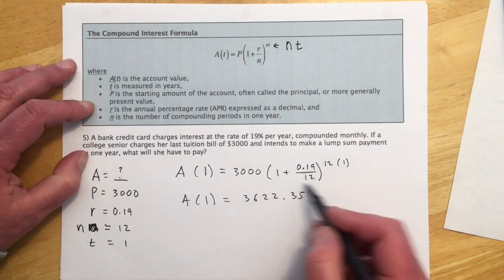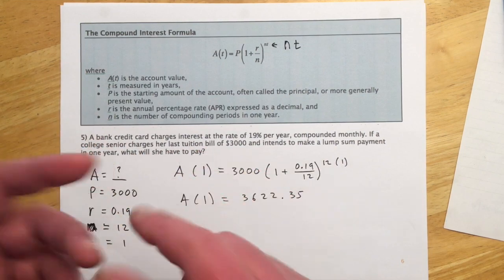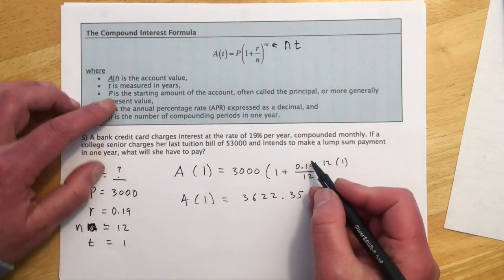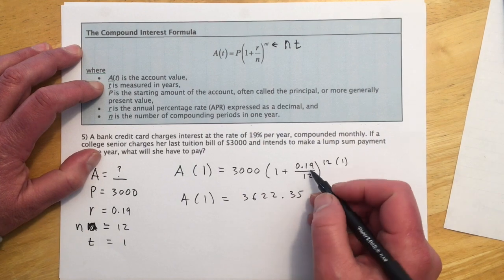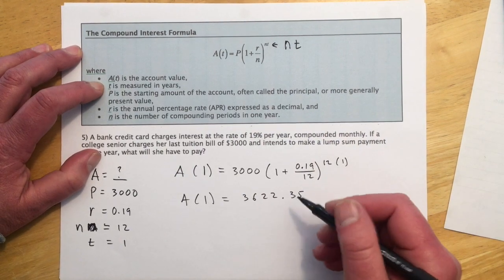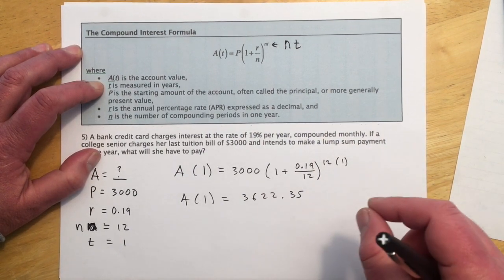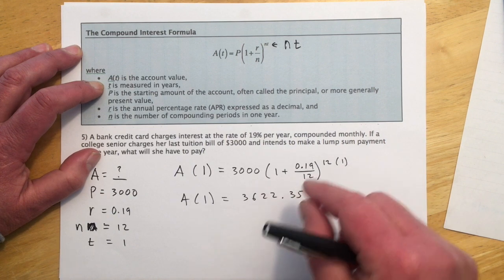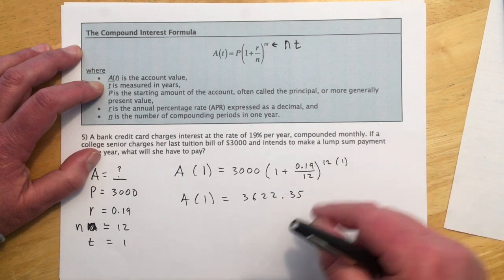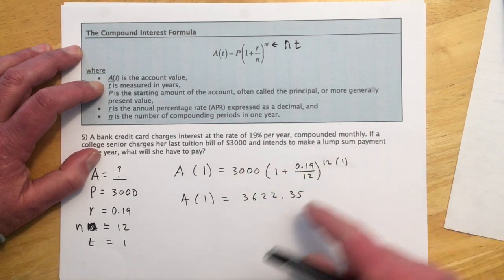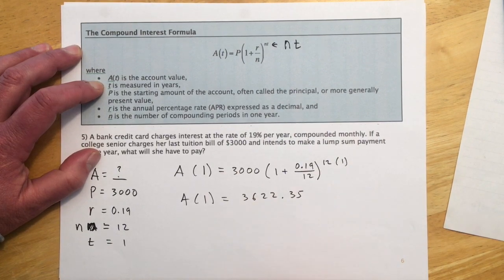Again, if you're plugging this into a small calculator where you can't put it all in at once, I would go 0.19 divided by 12, enter, plus 1, enter, and then raise to the 12th, enter, times 3,000, enter. And hopefully that gets you to that number.